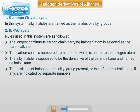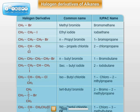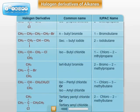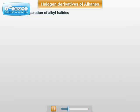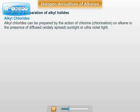The common system and IUPAC system names of alkyl halides are illustrated in the following table. Methods of preparation of alkyl halides — first, preparation of alkyl chlorides. Alkyl chlorides can be prepared by the action of chlorine on alkanes in the presence of diffused sunlight or UV light. This is known as halogenation, specifically chlorination.